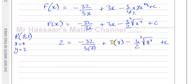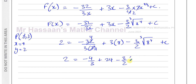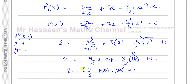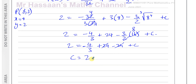Substituting x = 8 and f(x) = 2: 2 = −32/(3×8) + 3×8 − 3/2 × (cube root of 8)^4 + c. This gives: 2 = −32/24 + 24 − 3/2 × 16 + c, so 2 = −4/3 + 24 − 24 + c. The 24s cancel, leaving 2 = −4/3 + c, so c = 2 + 4/3 = 6/3 + 4/3 = 10/3.